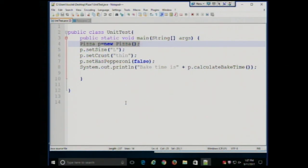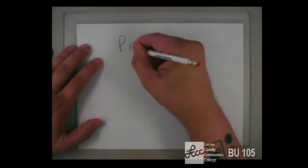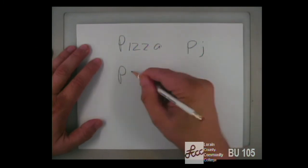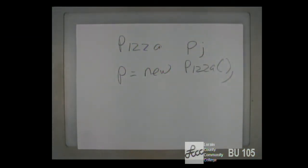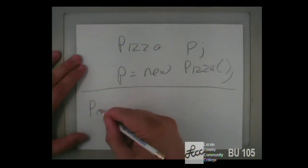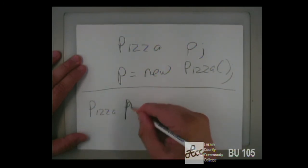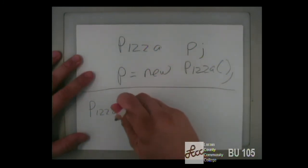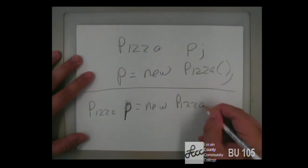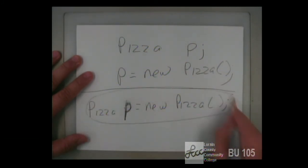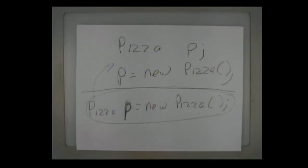When we call the constructor, we see a line like: `Pizza p = new Pizza()`. This is actually two statements combined, and we could write it as two separate statements. Let's break it down, because understanding each part is important.